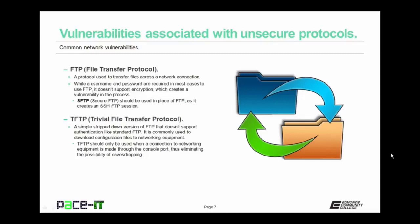TFTP, or Trivial File Transfer Protocol, is a simple stripped-down version of FTP that doesn't support authentication like standard FTP, making it even more unsecure. It is commonly used to download and upload configuration files for networking equipment. TFTP should only be used when a connection to networking equipment is made through the console port, thus eliminating the possibility of eavesdropping. And that console port should have its own security measures in place.